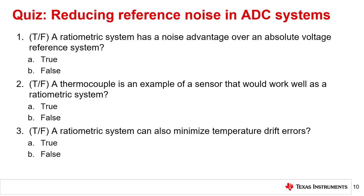Question 1. True or false. A ratiometric system has a noise advantage over an absolute voltage reference system. The correct answer to question 1 is A, true.